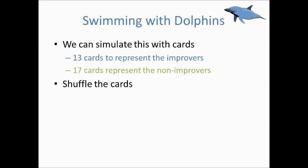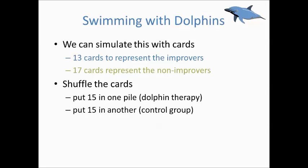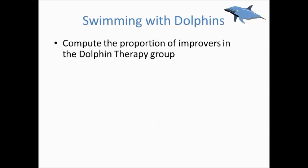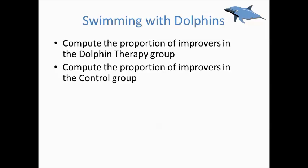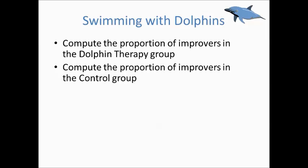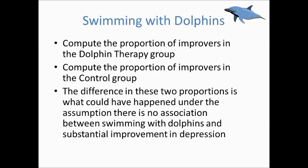We will then simulate the random assignment process of the subjects to the two groups by shuffling the cards. Then we'll put 15 cards in one pile to represent the dolphin therapy group, and 15 cards in another pile to represent the control group. This way, an improver is equally likely to be assigned to the dolphin therapy as to the control group. We will then compute the proportion of improvers in the dolphin therapy group, and compute the proportion of improvers in the control group. Finally, the difference in these two proportions is what could have happened under the assumption of no association between swimming with dolphins and substantial improvement in depression.